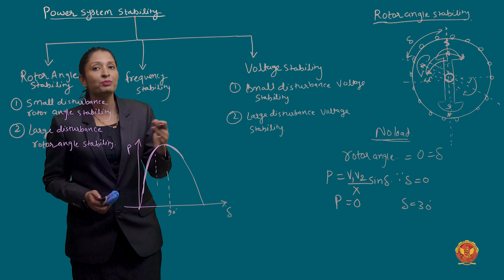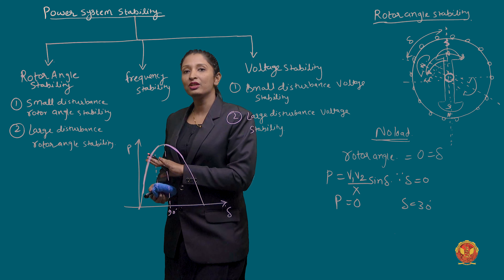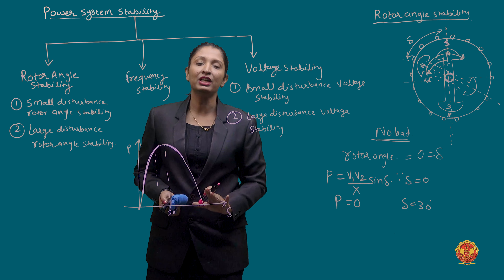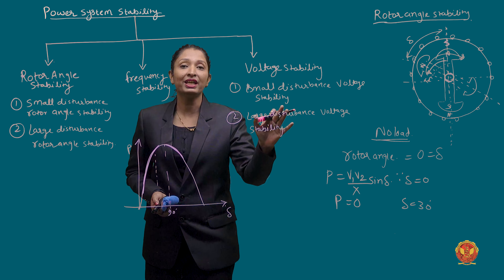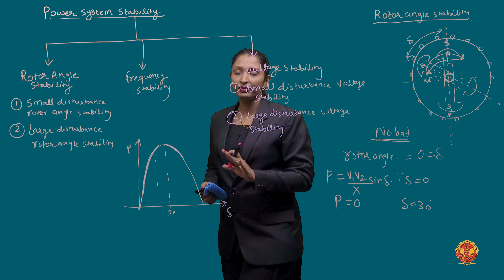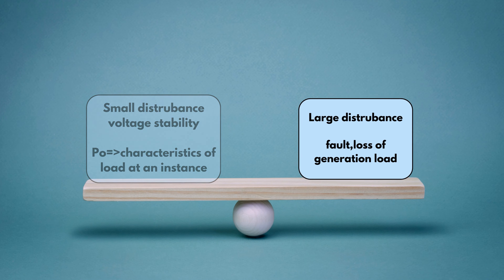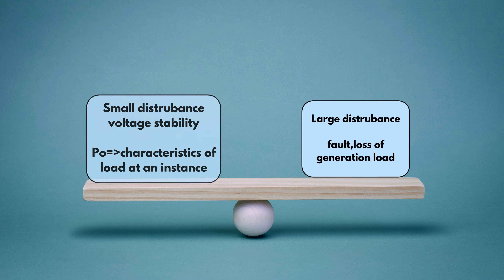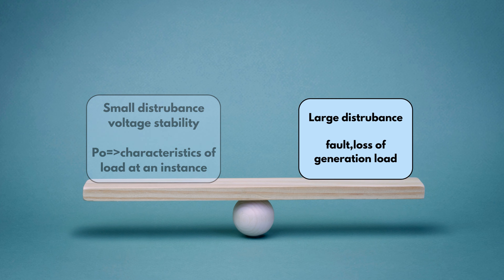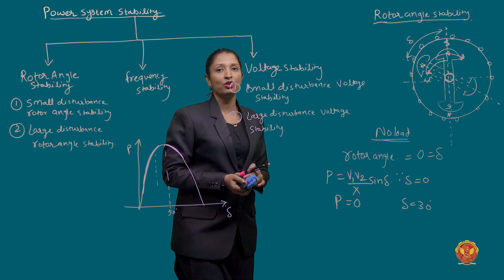Regarding frequency stability: when load is increased, frequency is reduced because frequency and speed are closely related. We use frequency controllers to make the system stable. Small disturbance voltage stability depends on the characteristics of the load and continuous and discrete control mechanisms. Large disturbance cases include faults, loss of generation, loss of load, and sudden increases in load. So this is your classification of power system stability.